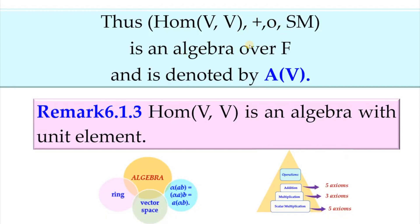Therefore, Hom(V,V) under these three operations is an algebra over F, denoted as A(V). Furthermore, Hom(V,V) is an algebra with unit element, because the identity mapping is always a linear transformation. Hereafter, instead of Hom(V,V), we will use A(V) to denote the collection of all linear transformations. With that, this video concludes.